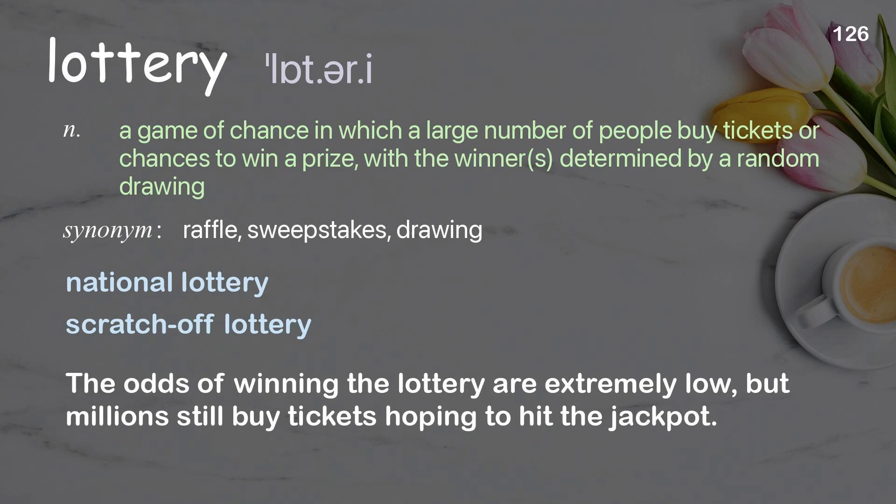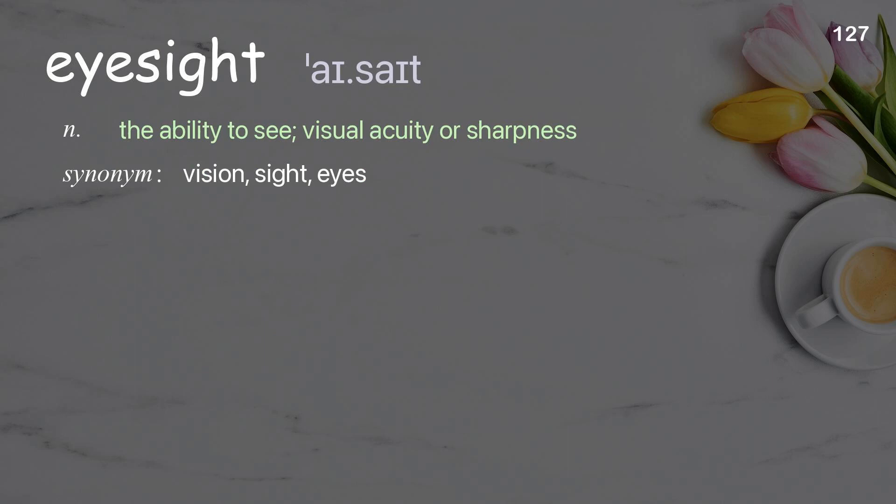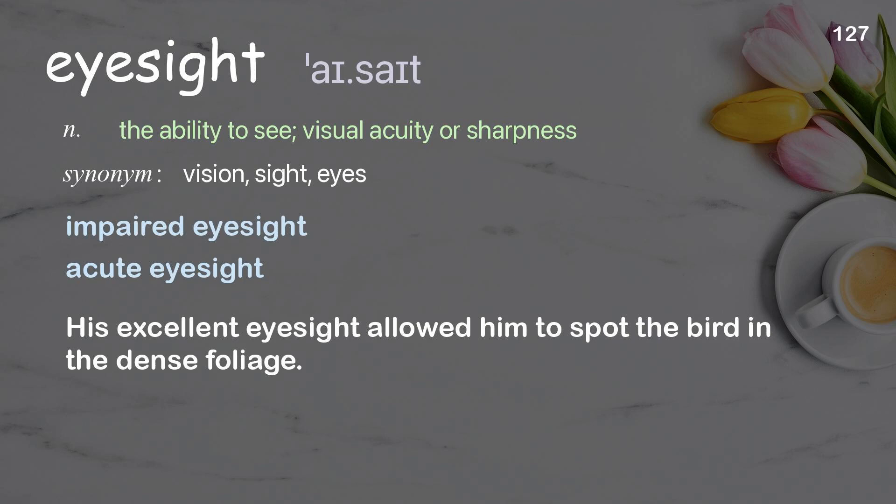Eyesight: the ability to see; visual acuity or sharpness. Examples: impaired eyesight, acute eyesight. His excellent eyesight allowed him to spot the bird in the dense foliage.